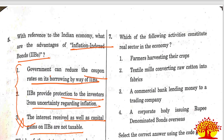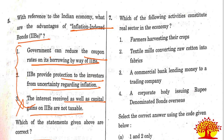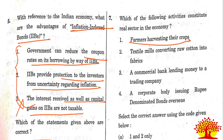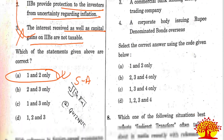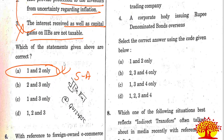Seventh question: which one of the following activities constitutes the real sector in the economy? Farmers harvesting their crops and textile mills converting raw cotton into fabric constitute the real sector of the economy. Option A, statements 1 and 2, is the correct answer.